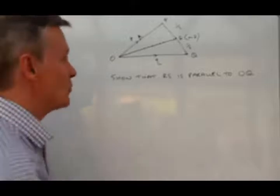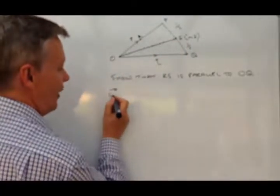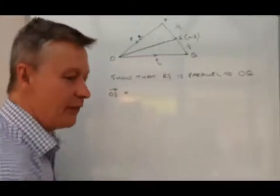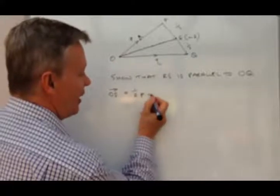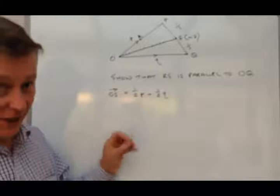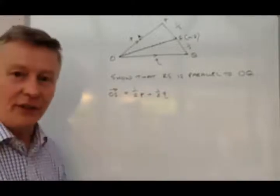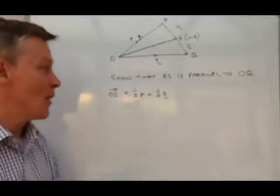And what we looked at before was working out vector OS. So we got vector OS, and if you look at the previous video, what we found out was that vector OS is a half P plus a half Q. Okay, that's fine, and that's from the last video. You need a little bit of refreshing on that. Please do look at the previous video.